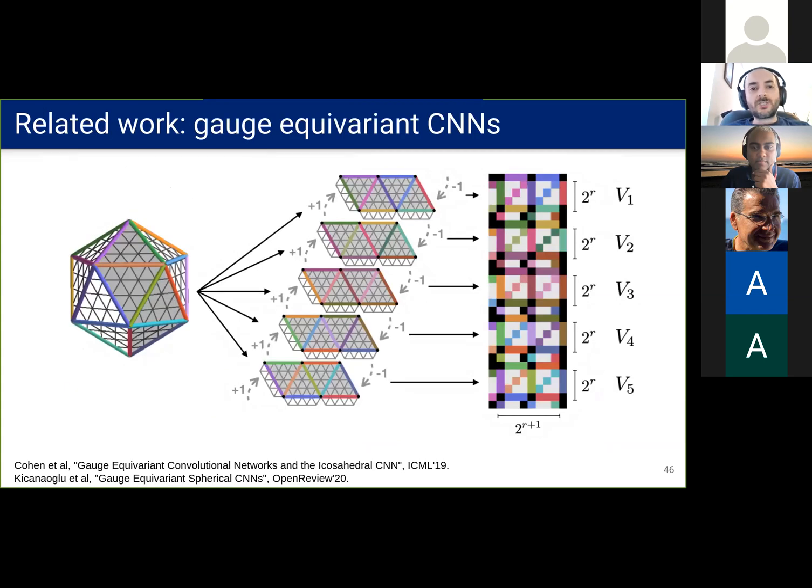So the gauge equivariant CNNs could also be used to achieve equivariance in the vector field sense on the sphere. And the major difference with respect to our method is that our convolutions are computed spectrally.